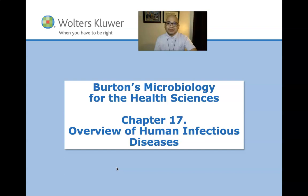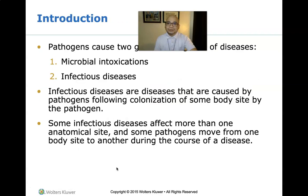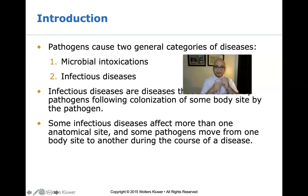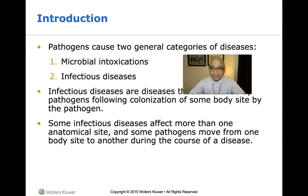We will be talking first about the overview of human infectious diseases. We have already discussed what we mean by pathogens — pathogens are microorganisms that can cause diseases. We can categorize two general categories of diseases: the first is due to microbial intoxication, and the second is due to infectious diseases.